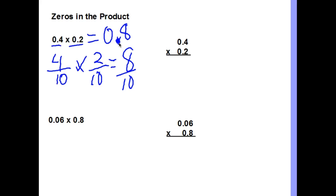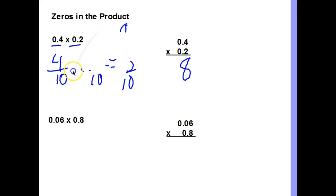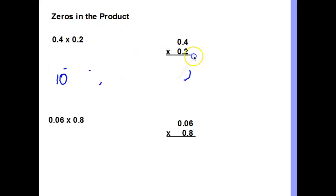If we use the standard algorithm, we'd say 4 times 2 is 8. But let me restart — that approach wasn't correct. Let's try this again. So we have decimals in both factors. 4 tenths as a fraction is 4 over 10, and 2 tenths is 2 over 10.